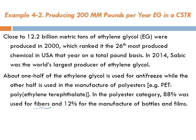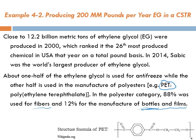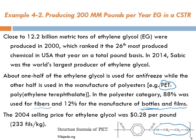In the polyester category, 88% is used for fibers — some clothes are made of polyester — and 12% for the manufacture of bottles and film. The clear water bottles you buy are often made of PET. This is the polymer structure of PET, and you can identify where the components come from: ethylene glycol, which itself comes from ethylene oxide. The 2004 selling price of ethylene glycol was $0.28 per pound (approximately $0.623 per kg).